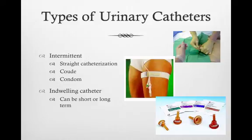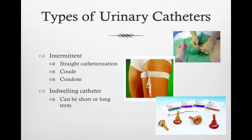With the intermittent catheter technique, the nurse introduces a straight catheter that is long enough to drain the bladder, and immediately removes it after insertion. This technique is commonly used in patients with spinal cord injury or neurological problems such as multiple sclerosis. These patients must be able to perform intermittent self-catheterization up to every four hours for months or even years.